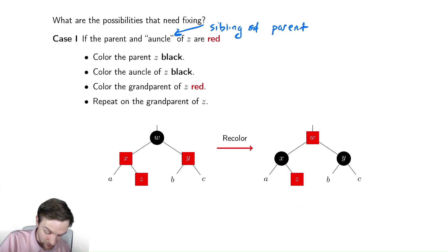Well, step one, we're going to recolor the parent to be black, and then Y to be black, and then we're going to recolor the grandparent to be red. So we permute the colors on all three of these nodes.